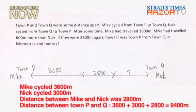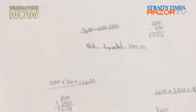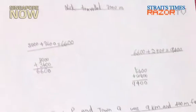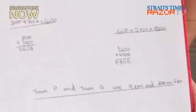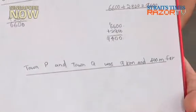So after that, Town P and Town Q was 9,400 meters far.